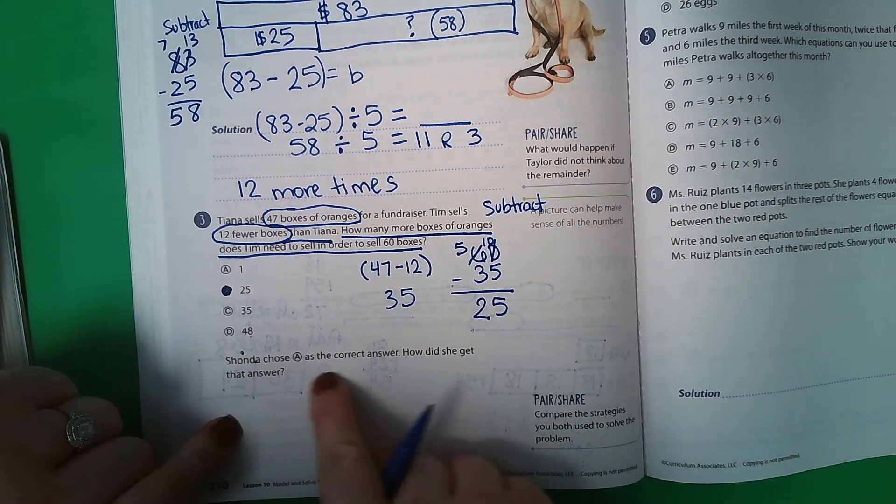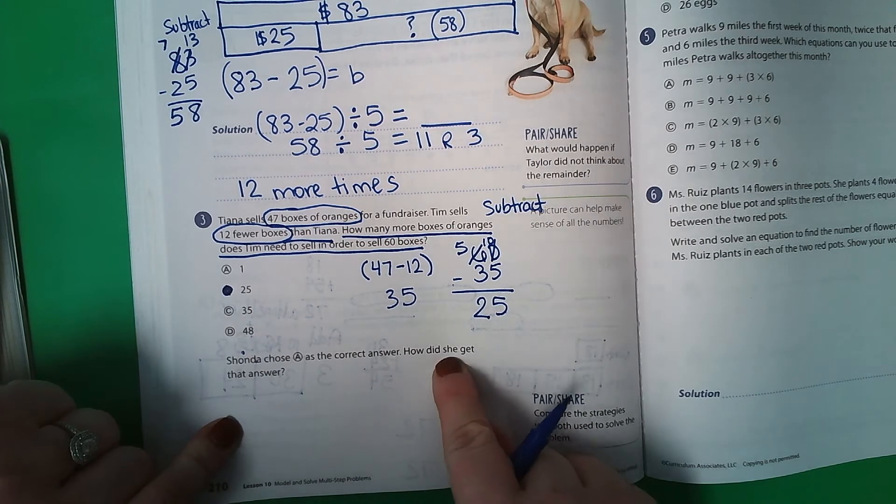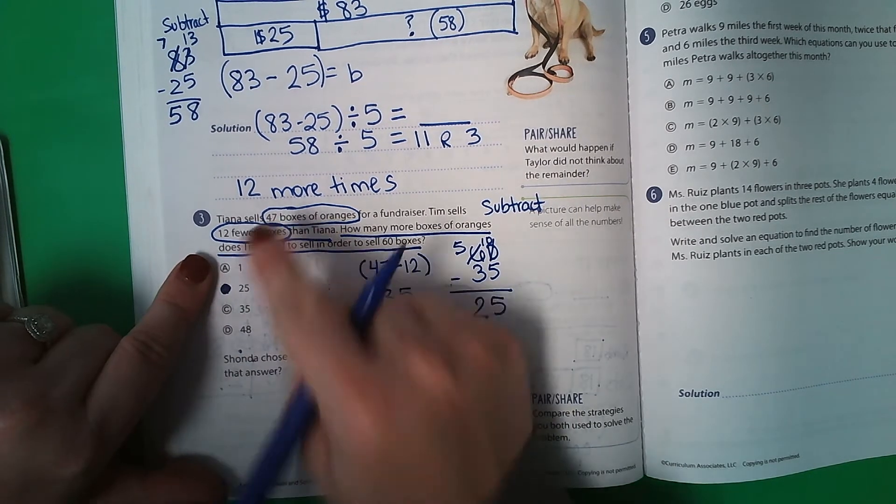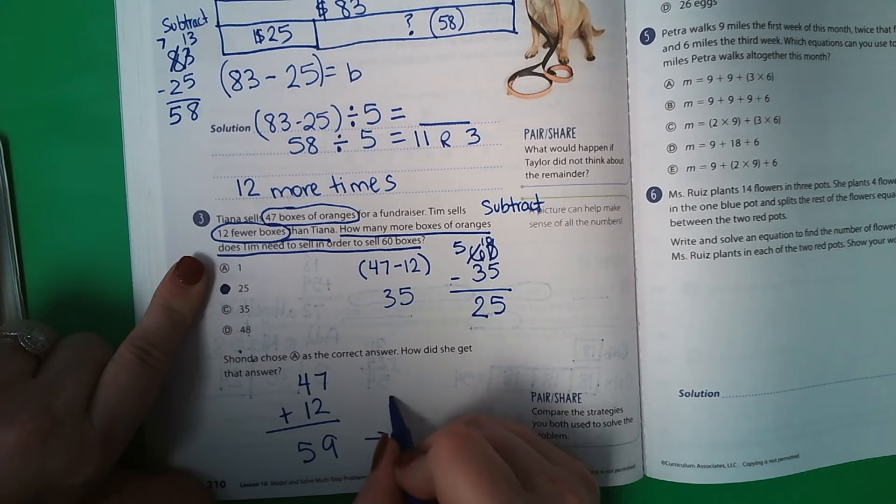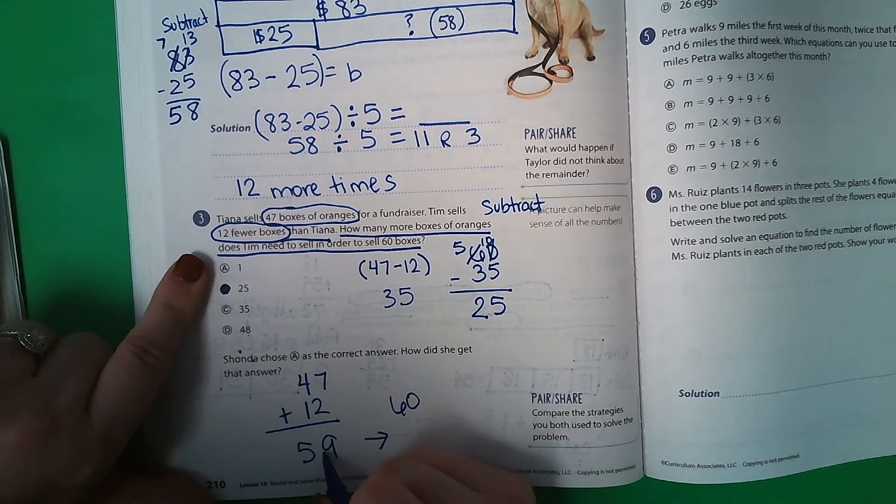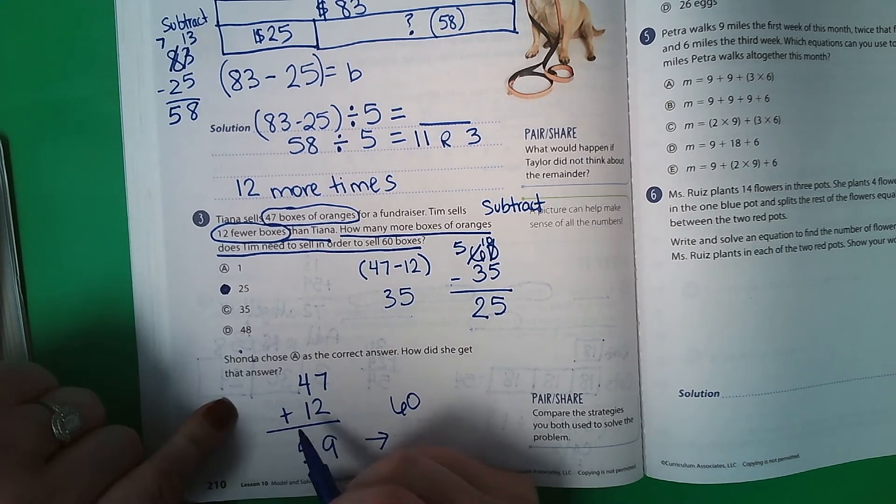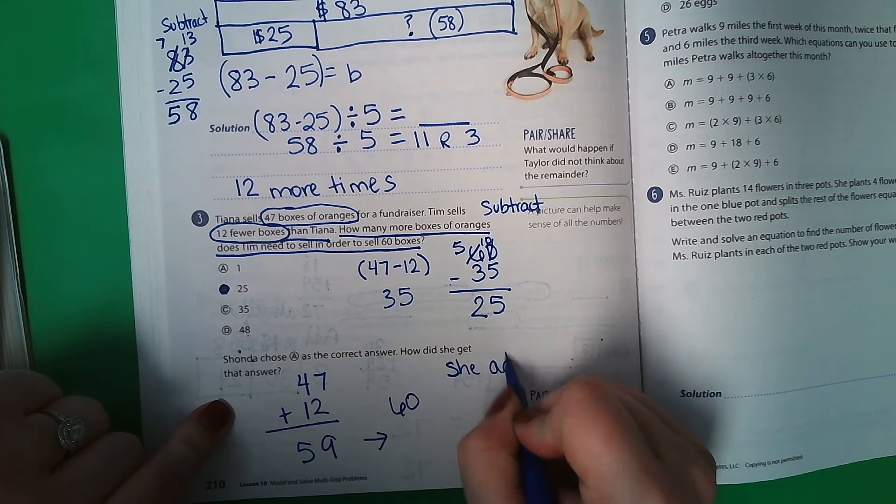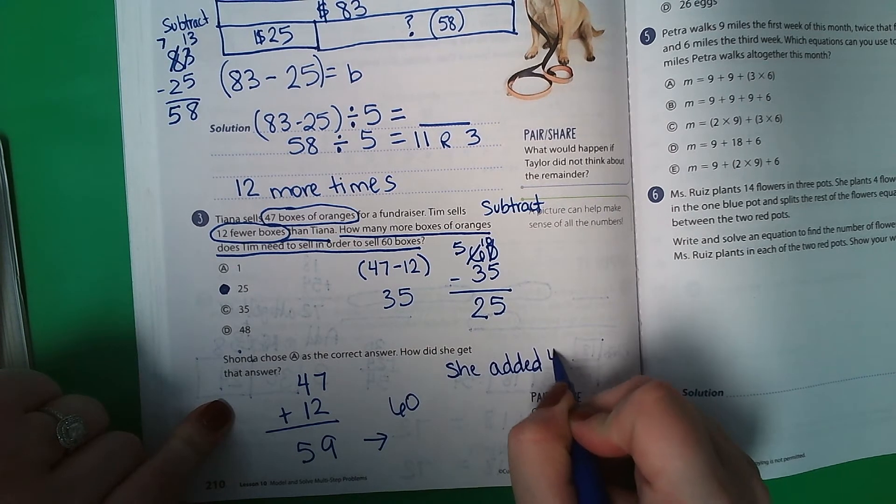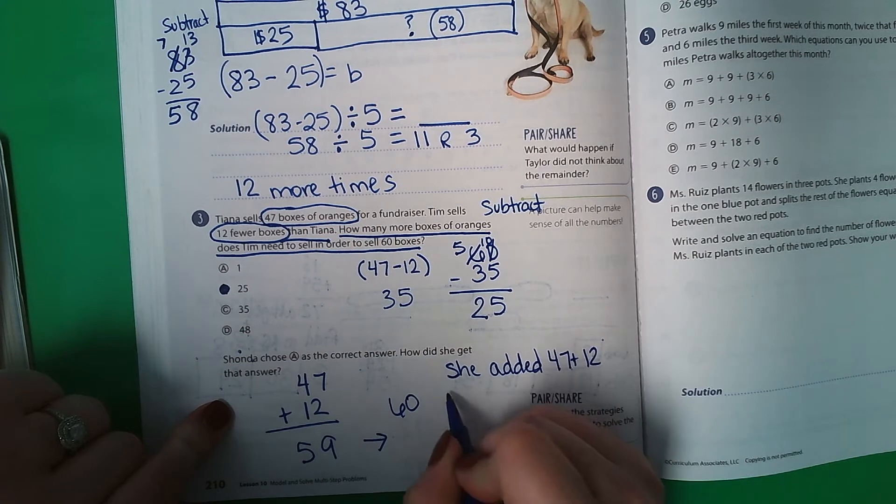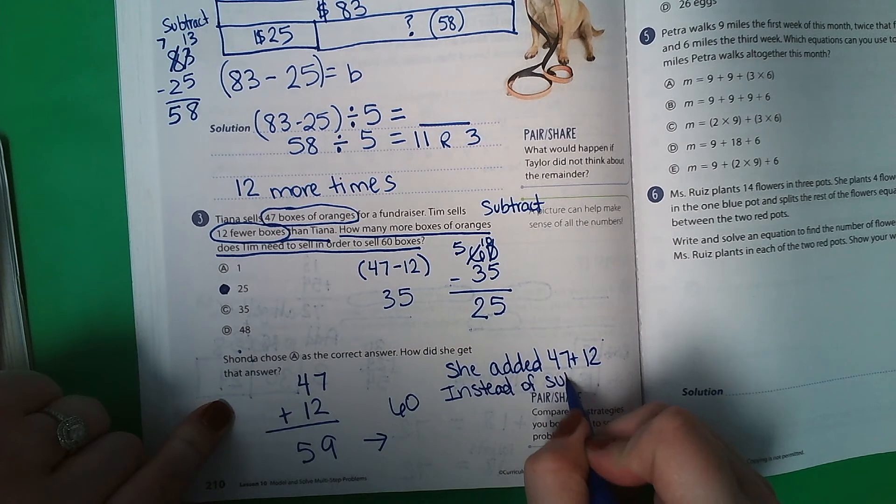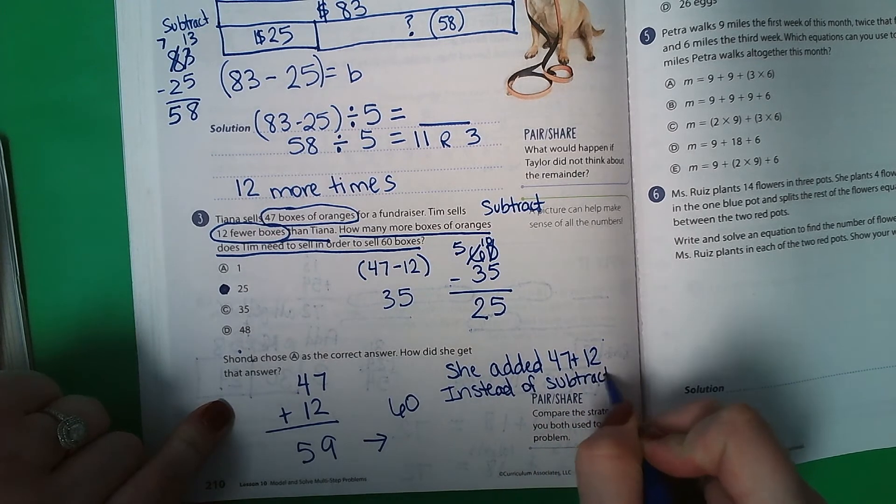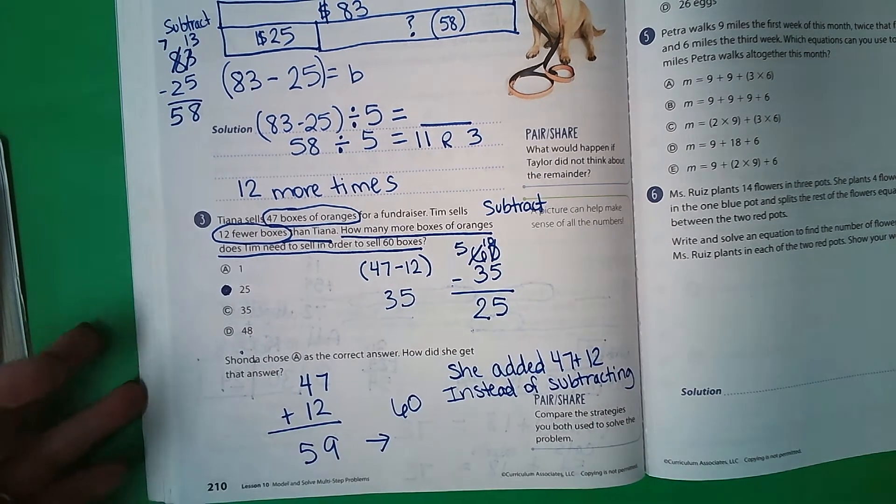Tiana chose A as the correct answer. How did she get that answer? Well, I bet you anything she added these. What's 47 plus 12? That's 9 and that's 5. And it said he wanted 60. So 60 minus 59 is 1. So she added 47 plus 12 instead of subtracting. And that's how she got that answer.